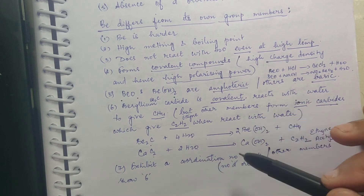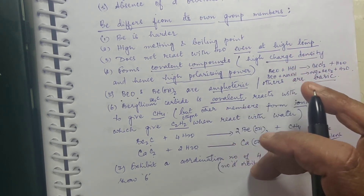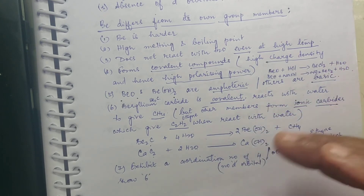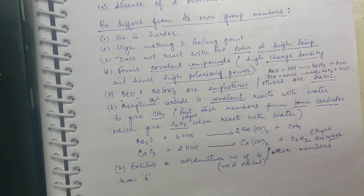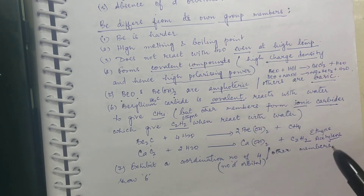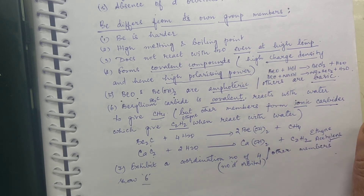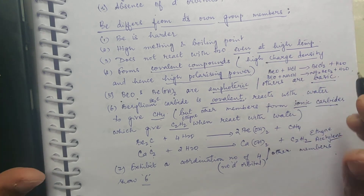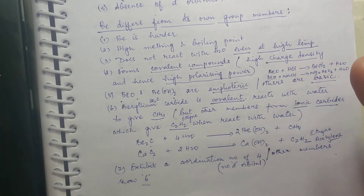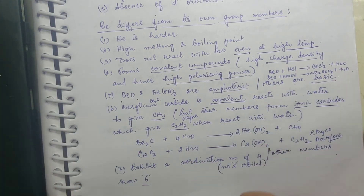Beryllium shows a coordination number of 4 — the number of bonds it can form — because it has only 2s and 2p orbitals, giving only 4 orbitals available to form bonds. Whereas the other members, because of the availability of nd orbitals, can show coordination up to 6. Coordination number is the number of bonds that an atom makes with its surrounding atoms.